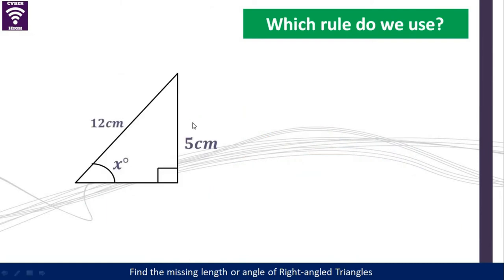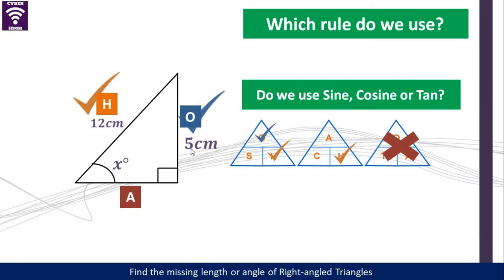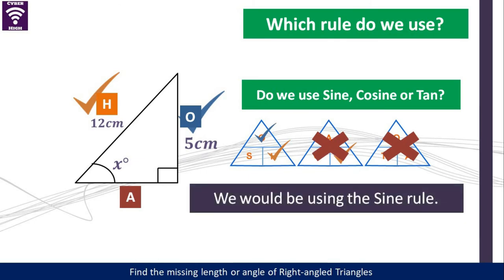Let's have a look at this one. Remember, the adjacent is always next to the angle. If you are given this angle up here, it means this side will now be your adjacent. In this case, we are given the hypotenuse — let's tick the hypotenuse. I want you to continue and identify which rule to use now. We have eliminated the cosine. What other side have been given? We have the opposite. So we can tick that, and then it means we are going to be using the sine rule. So we eliminate that and we can finally conclude that we are using the sine rule.